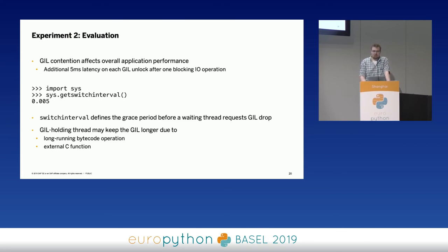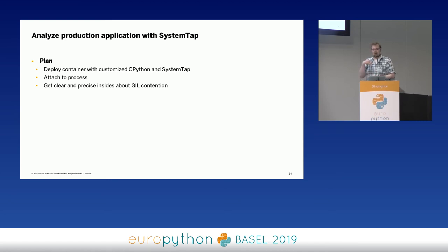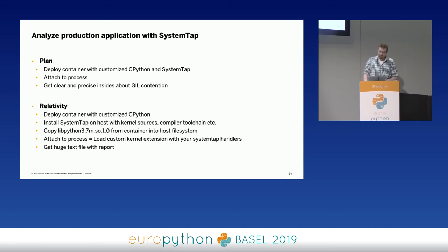Now we have a toolset we can use to analyze our productive application. The plan is to deploy a new container with our custom CPython version including SystemTap support, go to the machine running the scheduler, attach to the process, and get nice insights about GIL contention. In reality it was a bit different — deploying the container with the custom CPython version was easy, but we had to install SystemTap on the host because it's not easy to run SystemTap inside a container.